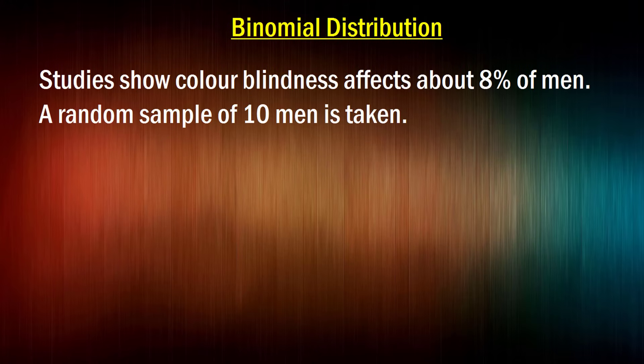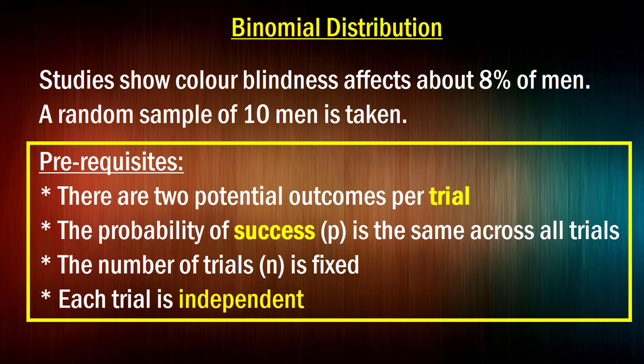So let's start with something real. None of this coin toss malarkey. Studies show colorblindness affects about 8% of men. And we have a random sample of 10 men taken. So the first question is, what makes this a binomial distribution? So the prerequisites of a binomial distribution are that there are two potential outcomes per trial. Now, that's a general word trial. Here, each trial is a single man in the sample. But there are two potential outcomes for each man in the sample. Either they have colorblindness or they don't.